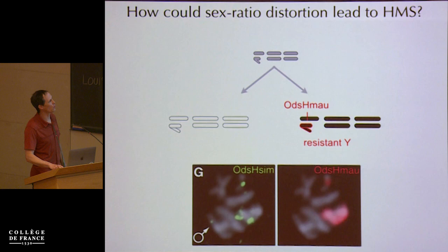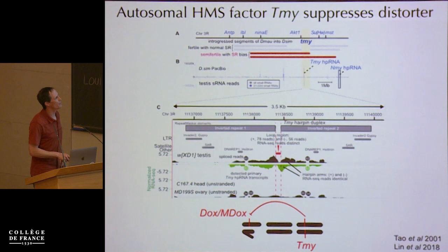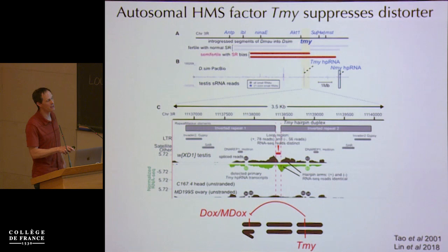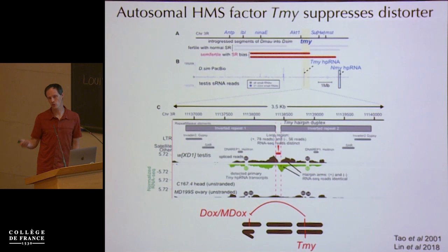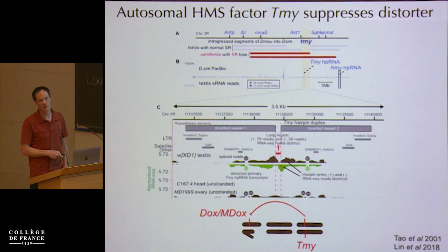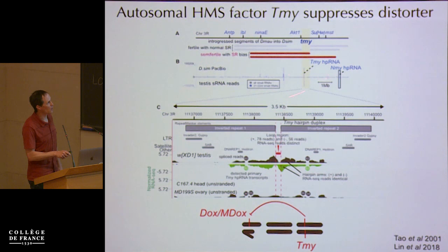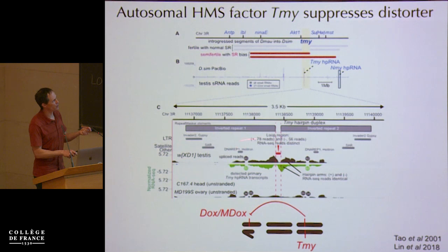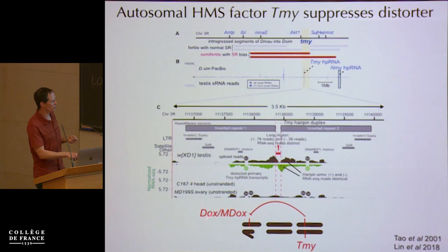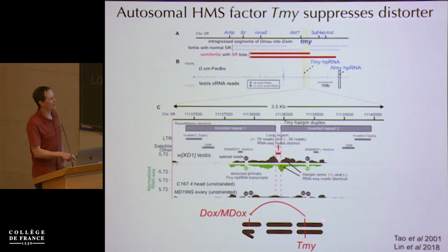We have more direct evidence for a role of meiotic drive in hybrid male sterility from older work by Yun Tao, who mapped an autosomal sterility factor he called Too Much Yin (TIMI). In addition to causing sterility, it caused semi-sterility where males produced almost exclusively daughters — a single locus doing both hybrid sterility and sex ratio distortion. Work from Eric Lai's lab molecularly identified TIMI: it is not a protein-coding gene but a locus encoding a small hairpin RNA. This inverted repeat structure is processed by Dicer in the testis and targets an X-linked distorter known as DOXS. There are two copies, DOXS and MDOX, and TIMI based on homology could potentially target both. So here we have an autosomal hybrid sterility factor that is also a suppressor of an X-linked distorter.